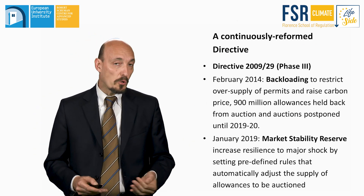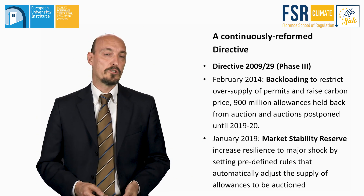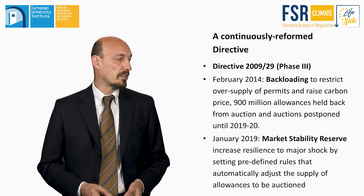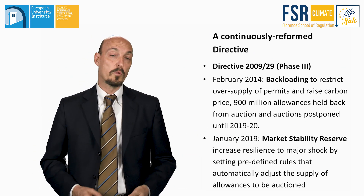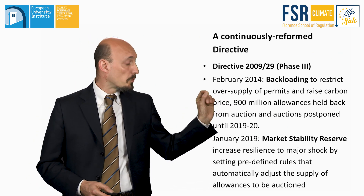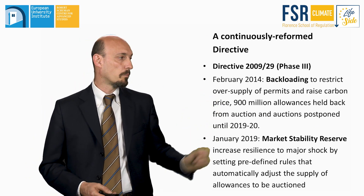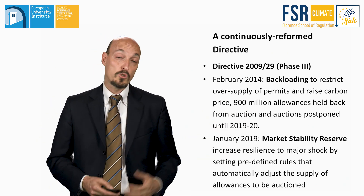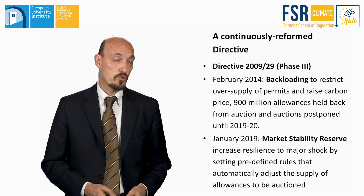But backloading was a short-term measure and a long-term solution was needed. So in January 2019, the Market Stability Reserve was implemented. The aim is to set predefined rules that automatically adjust the supply of allowances to be auctioned, in order to increase resilience to possible major shocks.